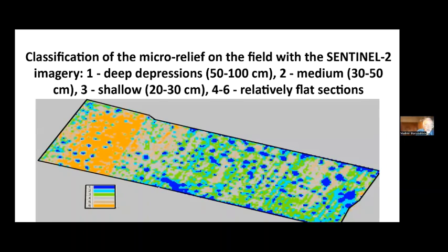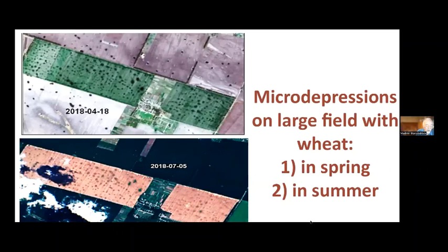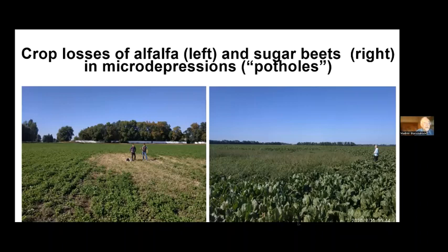The next stage of our investigation was classification of macro-depressions or potholes on a large field of 150 hectares using Sentinel-2 imagery, to determine optimal terms for remote sensing in spring and calculate wheat losses. At the same time, we spread our investigation to alfalfa, sugar beets, and other agricultural plants on a large farm with an area of about a thousand hectares.